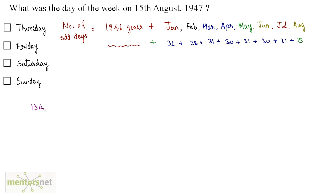So 1946 can be written as 1900 plus 46. 1900 is basically 1600 plus 300 plus 46. We are trying to split this 1900 into a part which is a multiple of 400 so that we can write it as 0 odd days. So 1600 is 0 odd days.